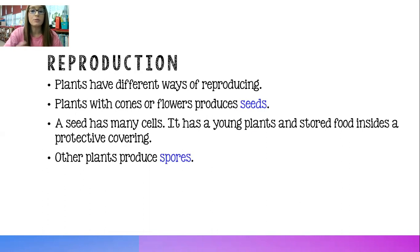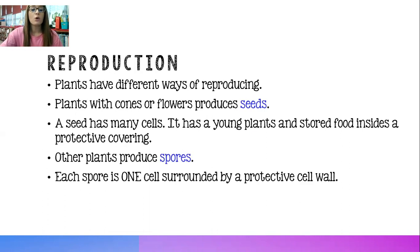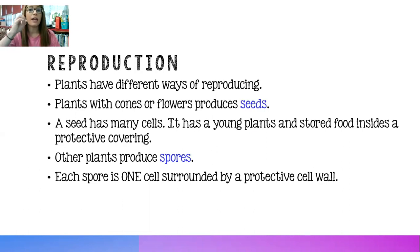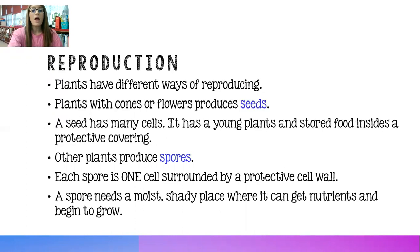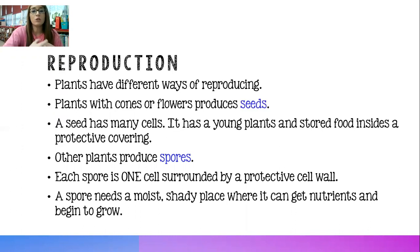Other plants produce spores. Spores are just one cell protected by a cell wall. They don't have a bunch of cells in there, a young plant, and stored food — it's just one cell with a protective cell wall around it. A spore needs a moist or damp shady place where it can get nutrients and then begin to grow. It does not have those nutrients inside of its shell with it like seeds do.